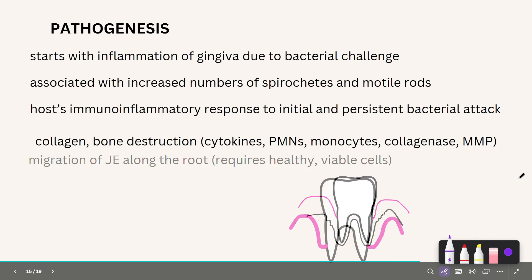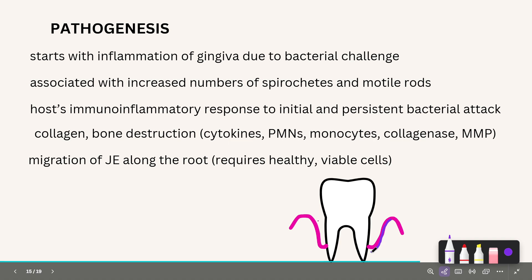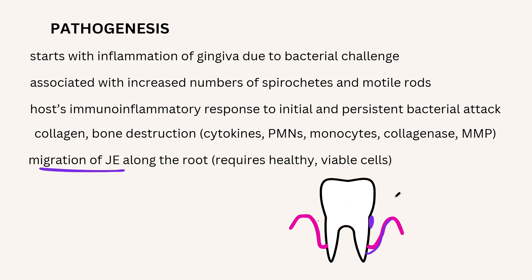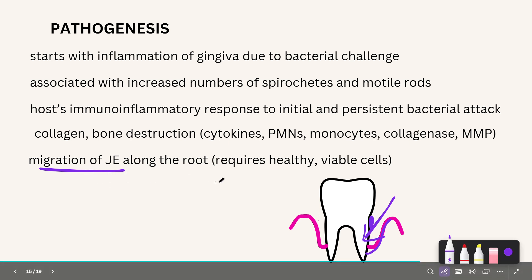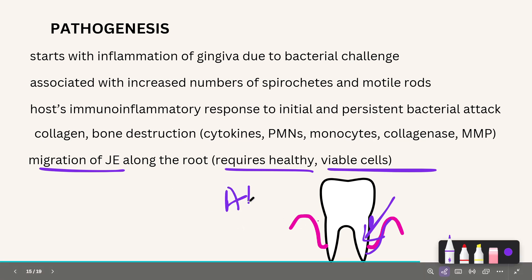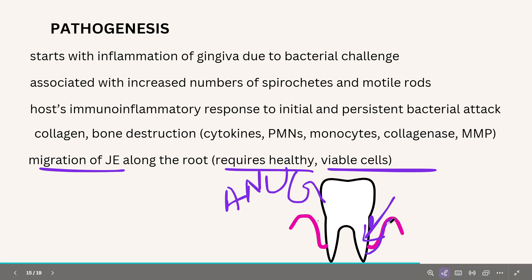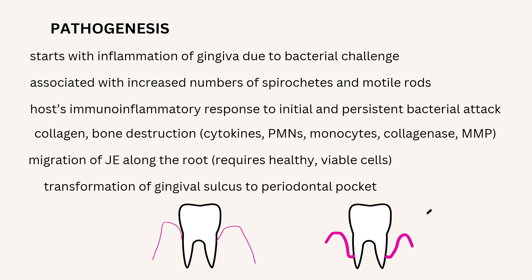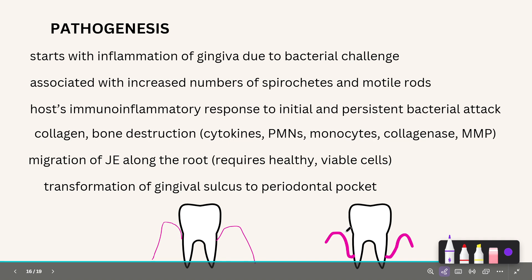The junctional epithelium tries to move away from the bacterial challenge — if plaque is present, it migrates apically, and this migration of the junctional epithelium results in the periodontal pocket. Migration requires healthy and viable cells; necrosis of the junctional epithelium is not possible when a pocket is present. When necrosis does occur, as in necrotizing ulcerative gingivitis, the attack is so overwhelming the gingiva undergoes necrosis rather than forming a pocket.